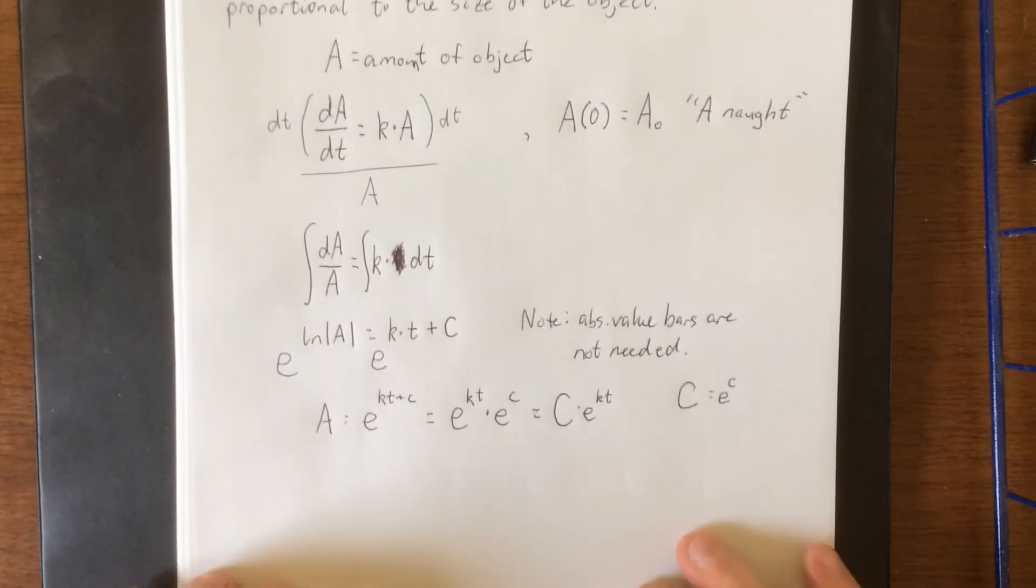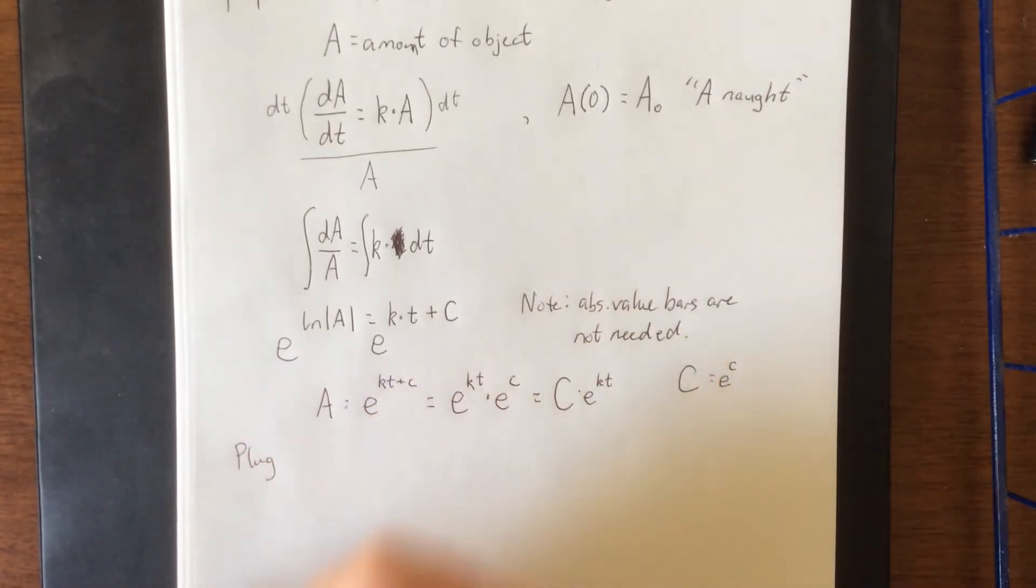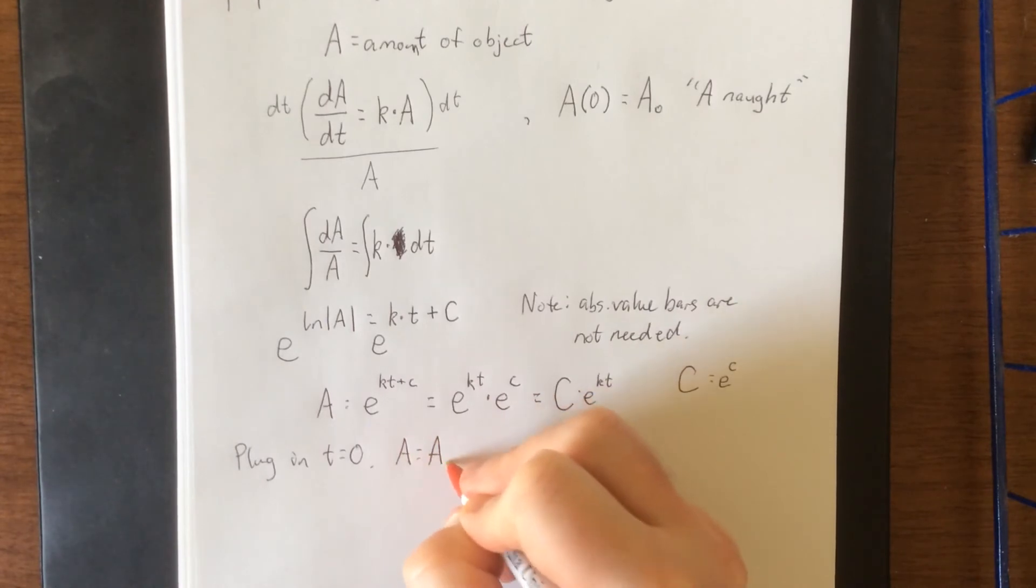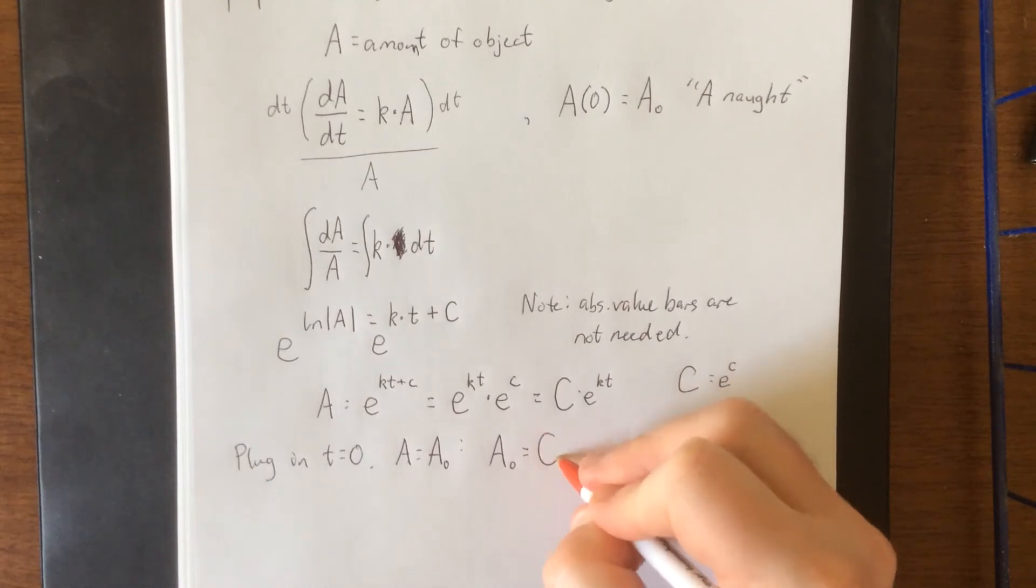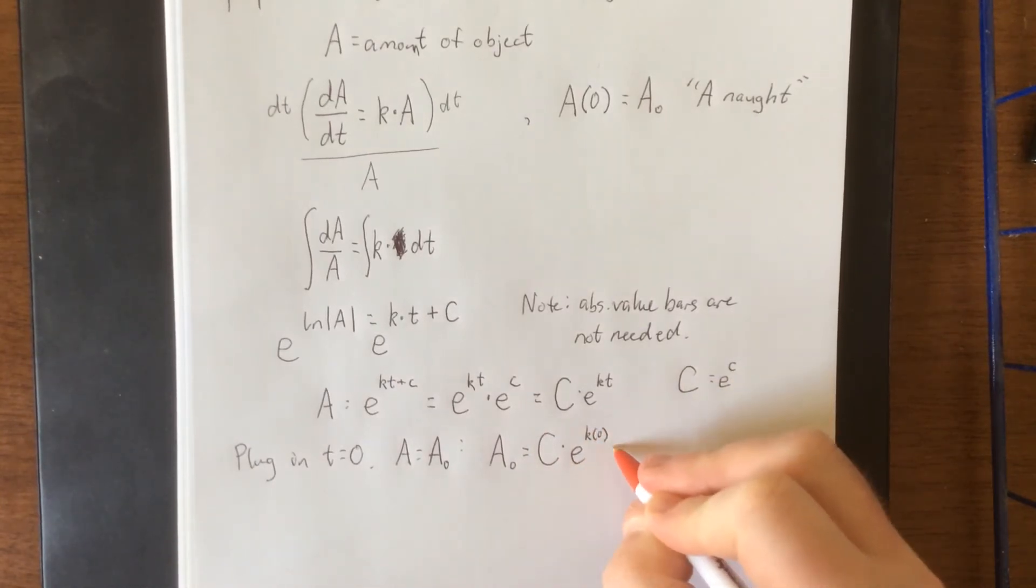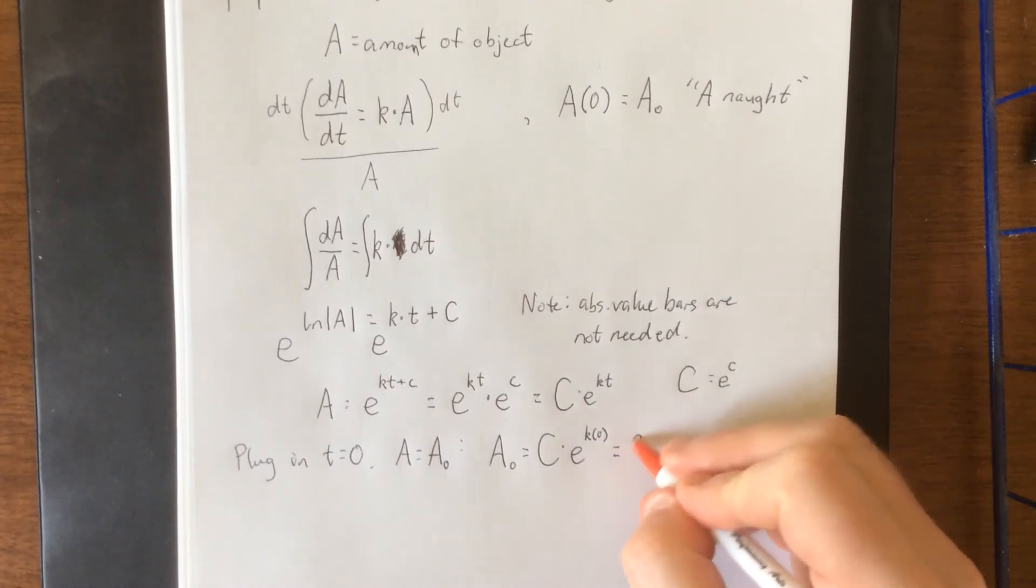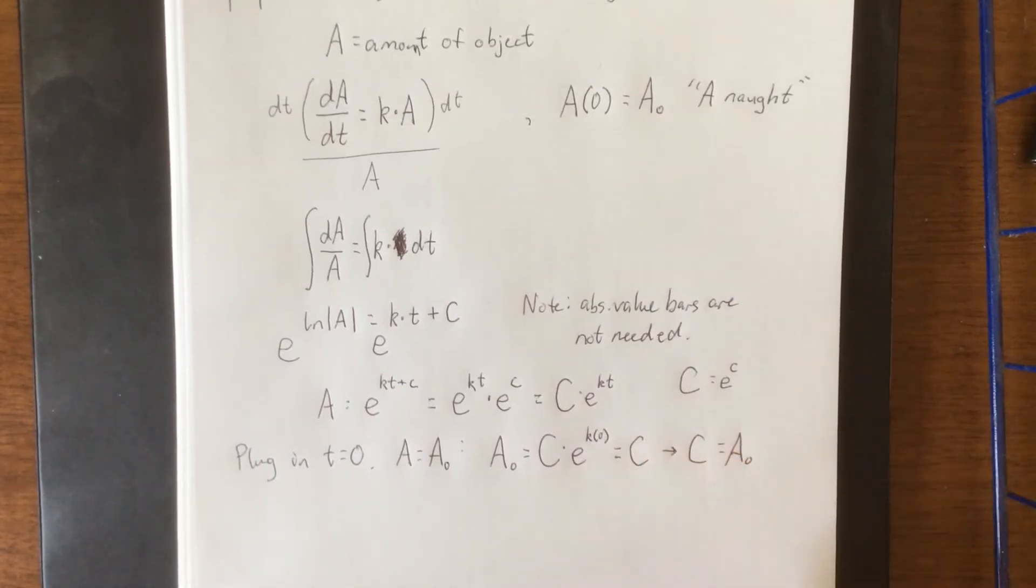Now with that in mind, let's plug in our initial condition so we can solve for that capital C. We'll plug in t equals zero and A equals A naught. That gives us A naught equals capital C times e to the k times zero. However, zero times k is zero, e to the zero is one, and one times c is just c. As such, our capital C is actually equal to A naught.